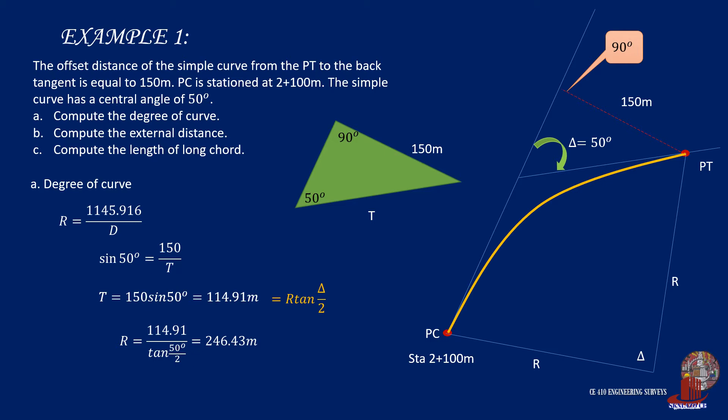From here, we can get back to the first equation of the degree of curve and solve it as 1145.916 divided by 246.43 meters, which gives 4.65 degrees.